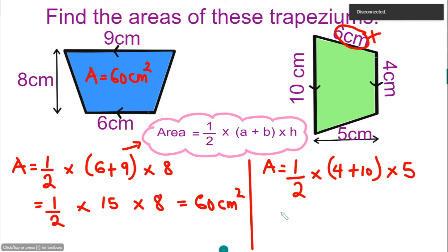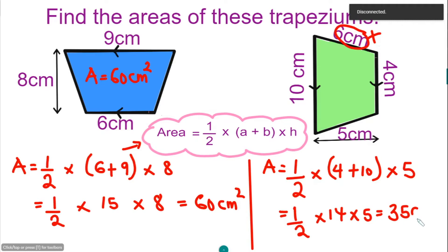If you simplify further, you're going to have a half times 14 — since 4 plus 10 is 14 — and 14 times 5 is going to give you 35 cm squared. So the area here is 35 cm squared.